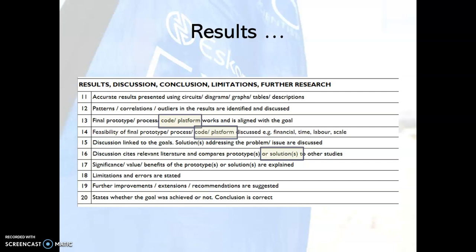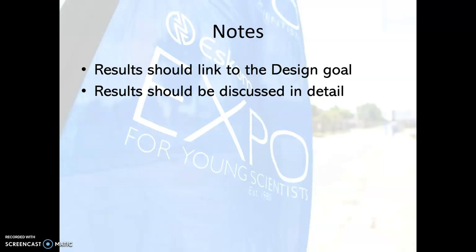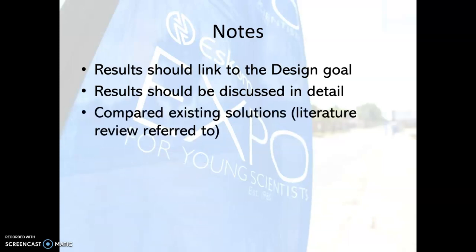Number 15 is relevant to whatever type of project you're doing. Number 16: the discussion will cite relevant literature and compare the solutions to other studies — not prototypes. Similarly, number 17: the significance, value, and benefits of the solutions are explained. It's important that the results link back to the design goal — how are they going to use computer science to solve a problem? These results need to be discussed in detail, not merely a short paragraph. The learner should almost certainly be referring back to their literature review.